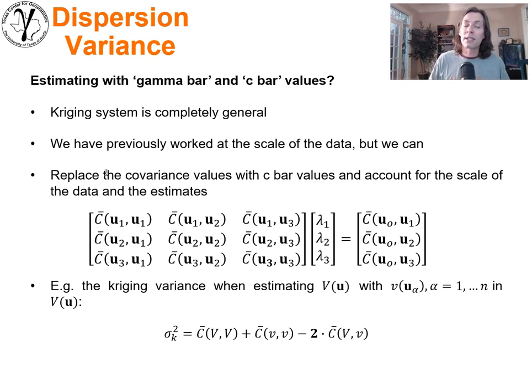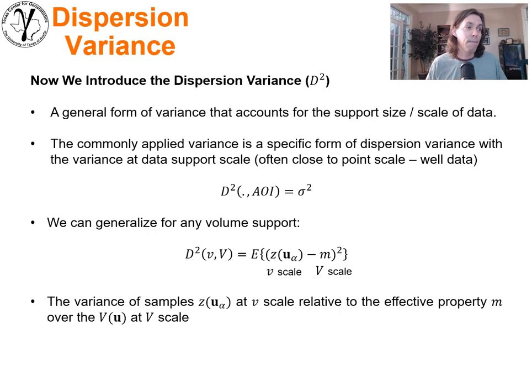Now what's happening is we have a measure of the similarity between the data and themselves accounting for their volumes, and if we were doing simulation it would also include the model cells that have previously been simulated, probably at a very different scale than the data themselves. So this is quite powerful. In fact, we can solve for the kriging variance using c bar values—everything works with the c bar values. It's completely general.